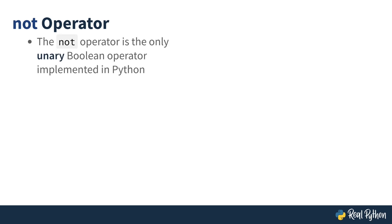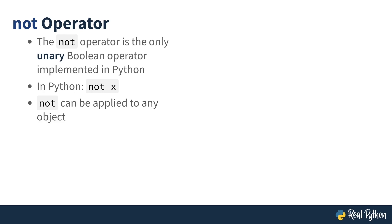Let's start off with the not operator. The not operator is the only unary Boolean operator implemented in Python. Unary means the operator takes only one input. In Python, to apply the not operator on the input x, you simply type not x. Not can be applied to any object, not just Boolean data types. Not always returns either true or false depending on the Boolean value of the input. Not is the only Boolean operator we'll discuss that always returns a Boolean data type. The other two operators — and and or — will return one of the values of the inputs, and we'll discuss this in upcoming lessons.